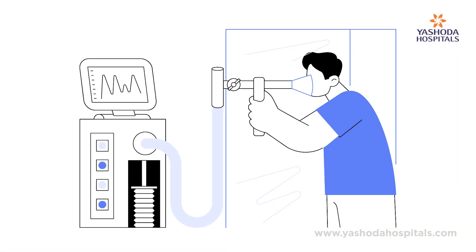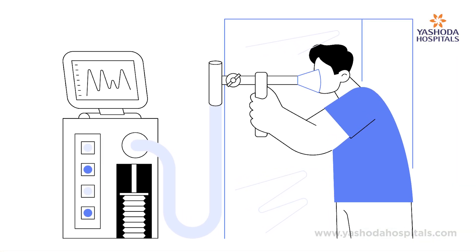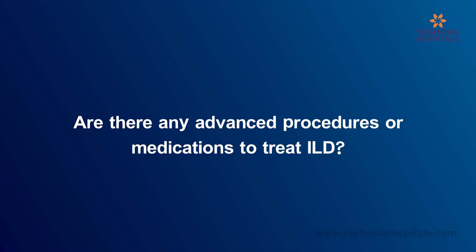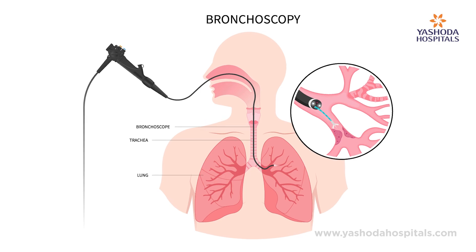In addition to this, to assess the functional capacity of the lung, your doctor may order a pulmonary function test. These tests help identify what sort of interstitial lung disease you are dealing with. Rarely, some interstitial lung diseases may also require certain advanced procedures like a bronchoscopy, where biopsies are taken from the lung to characterize what type of interstitial lung disease you are suffering from.